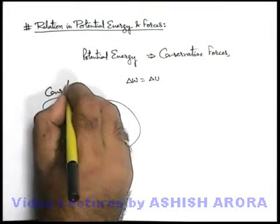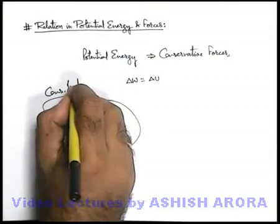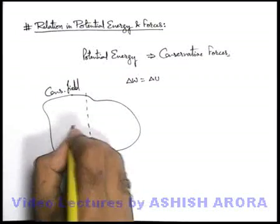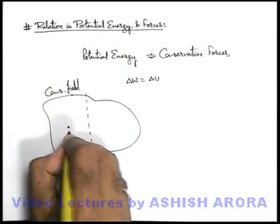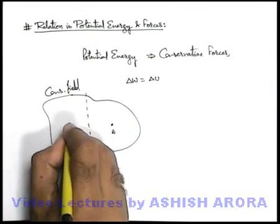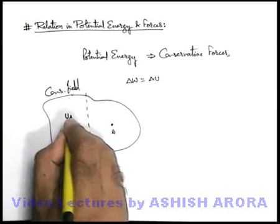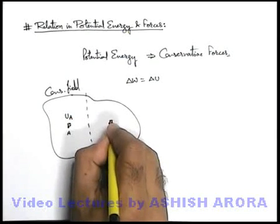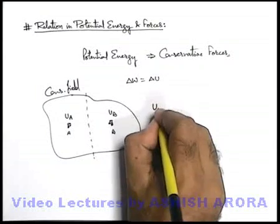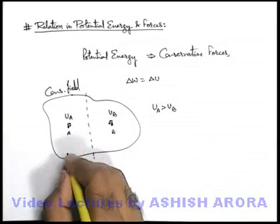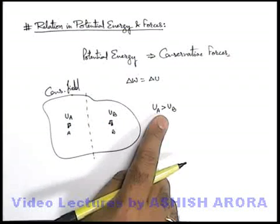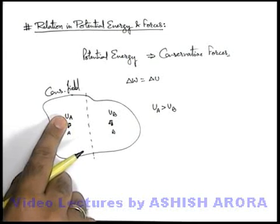Say this is a conservative field. In this conservative field, let us divide it into two parts. On the left part there is a point A and on the right part there is a point B. When a body is placed at point A its energy is U_A, and when the same body is placed at B, its energy is U_B. We are given that U_A is greater than U_B. So at position B the energy is less, and at position A the potential energy is more.